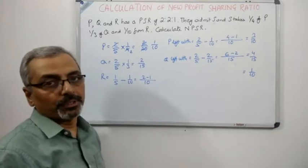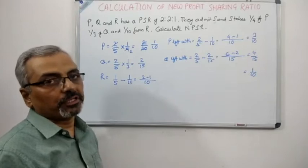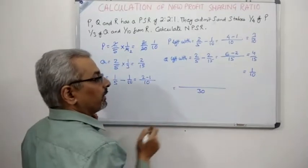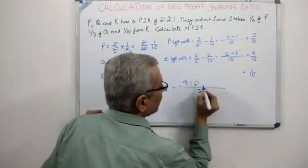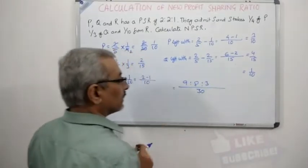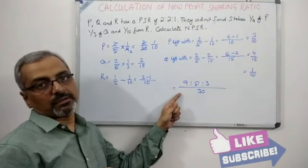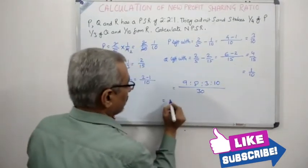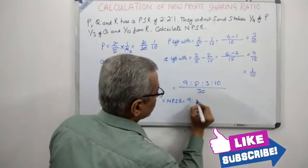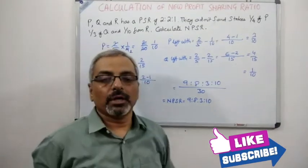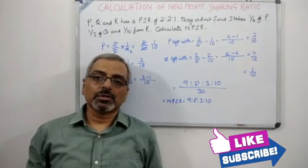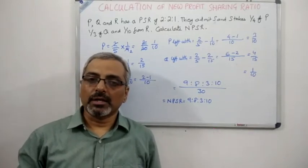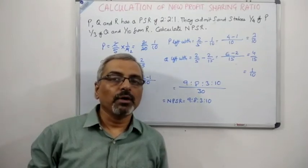With denominator 30: P's share 3/10 = 9/30, Q's share 4/15 = 8/30, and R's share 1/10 = 3/30. Adding 9 + 8 + 3 = 20, and since the denominator is 30, S's share is 30 minus 20 = 10/30. Therefore, the new profit sharing ratio is 9:8:3:10. With this we have come to the end of the calculations of the new profit sharing ratio — I have spent three lectures on that, and shortly I will come up with the concept of sacrificing ratio.